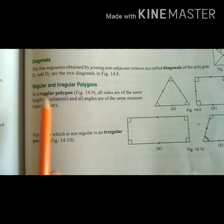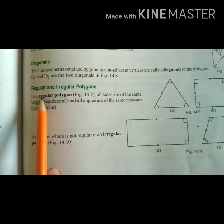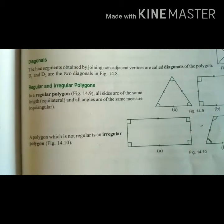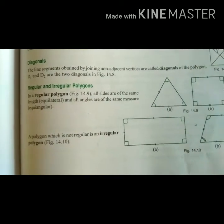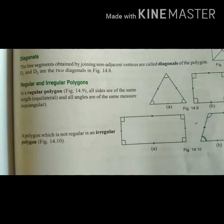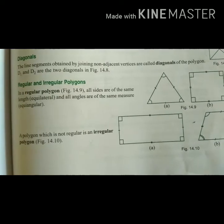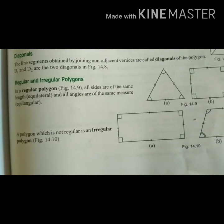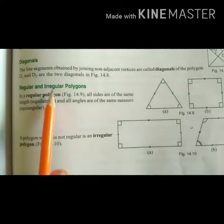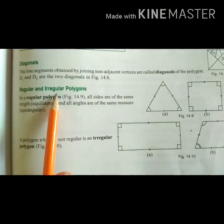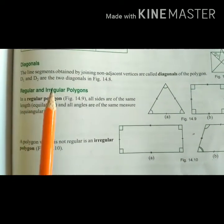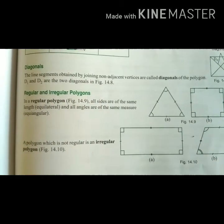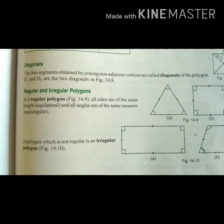Now, regular and irregular polygons. Regular polygons are those which have all sides and all angles equal — for example, an equilateral triangle or a square. Irregular polygons are those which do not have all sides and all angles equal — for example, a general quadrilateral.